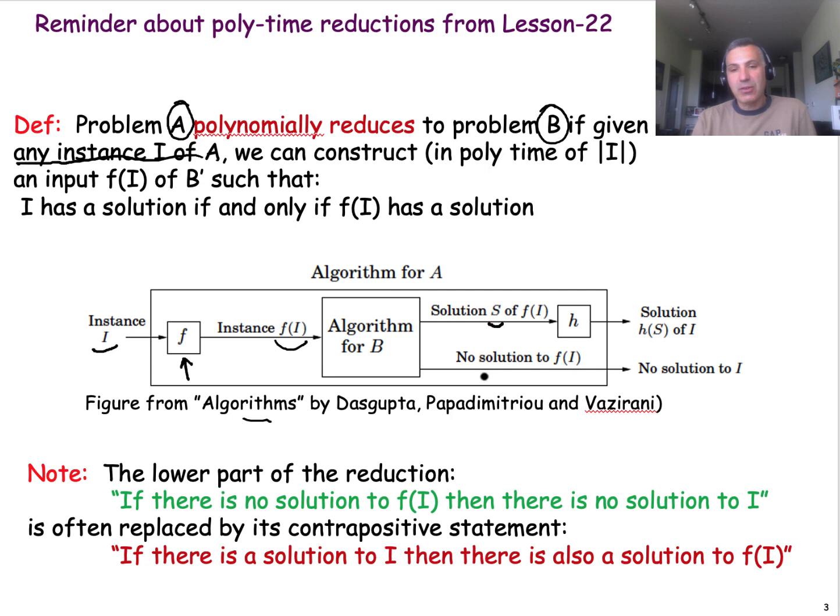For example, if I ask you, is there a minimum cut in a graph of size 100? Perhaps the answer is no. So you have to consider both cases. If there is no solution for this instance of problem B, then we would like to be able to say that there is also no solution for the original instance that we started of problem A.